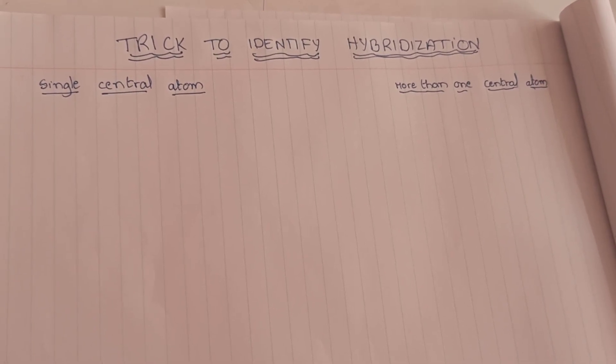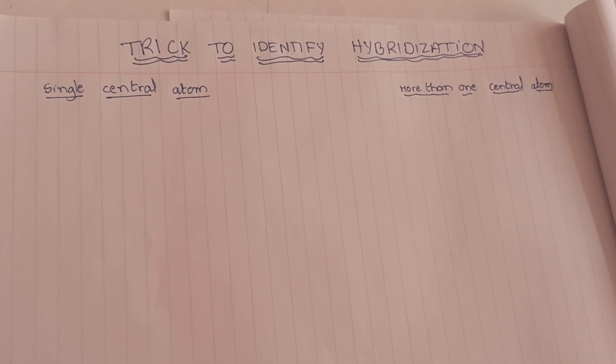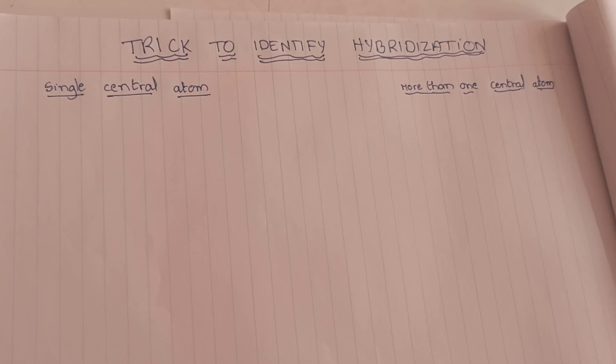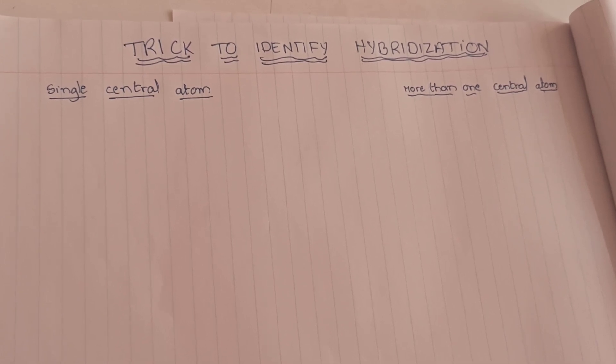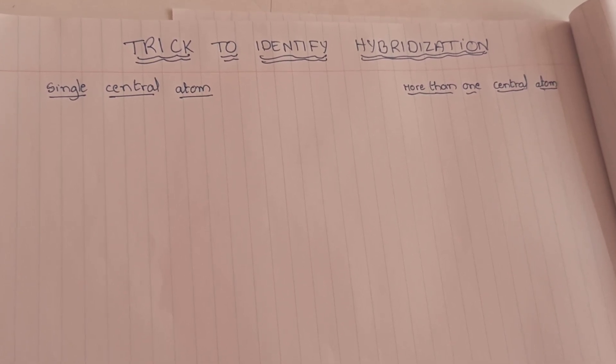Hi learners, welcome. In this video I am going to explain a simple trick to find the hybridization of a given molecule. Generally hybridization means we will talk about the central atom. Based on that I am going to give two different concepts here.